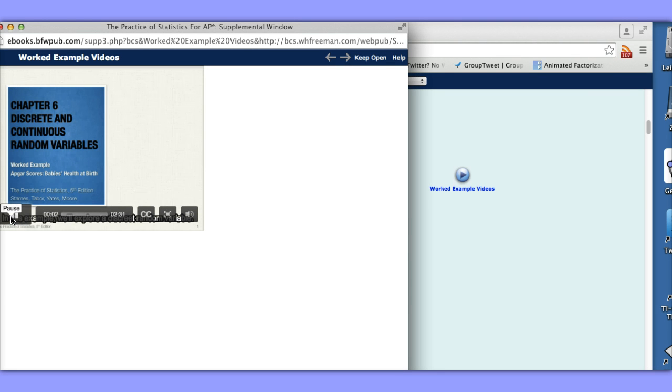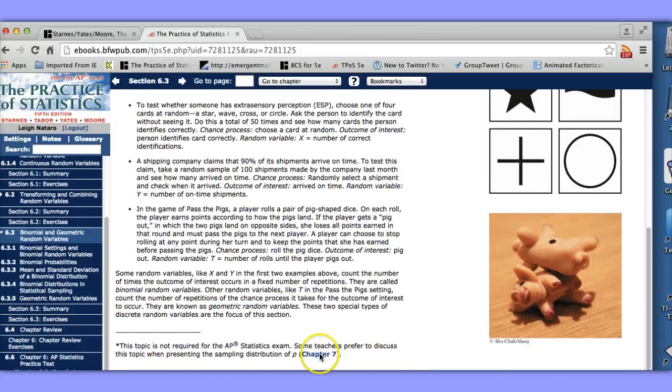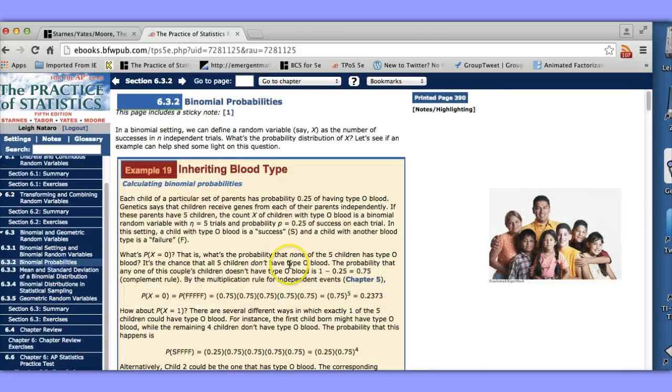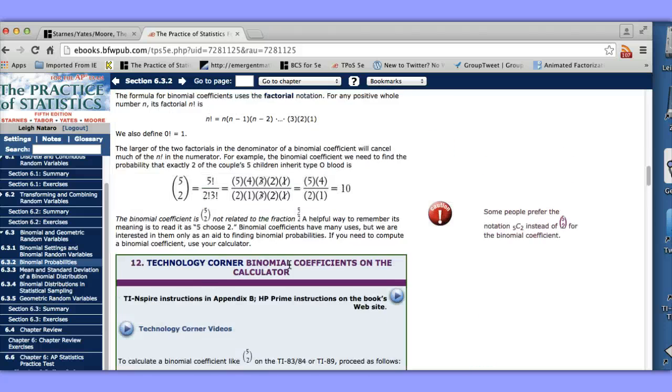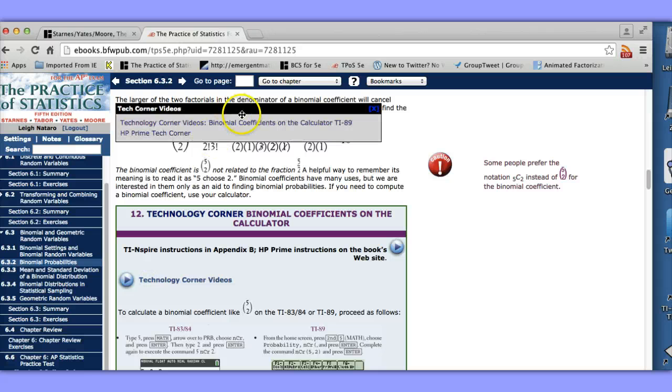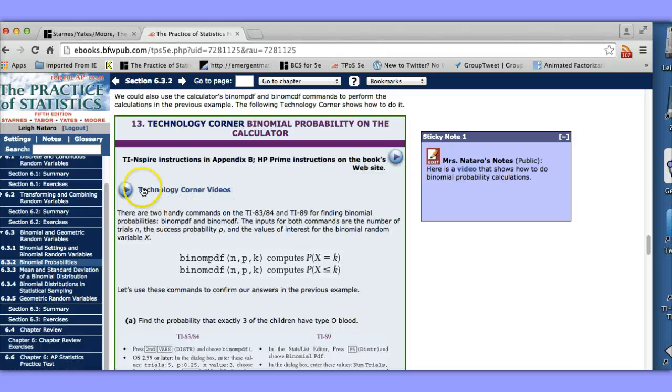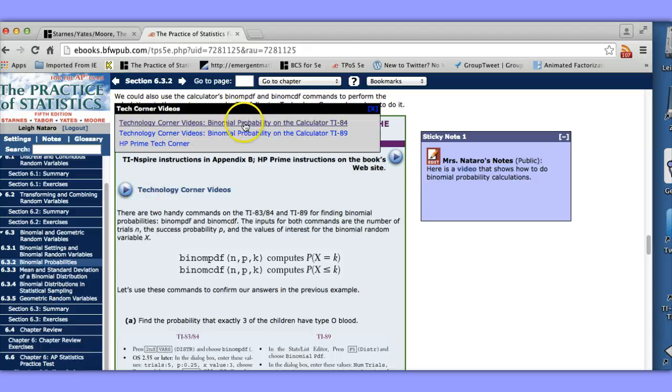Hi this is Jason Molesky. In this example we'll explore a discrete... Looks like Jason has a lot of videos within this particular book. And let's take a look at another feature that I like. And that is the technology corner video. So let's take a look at calculating a probability. There are links to information related to the TI-89 and the HP Prime calculator. So there's information there for the students. But let's take a look at an actual technology corner video. This one's for the TI-84 that we'll take a look at.